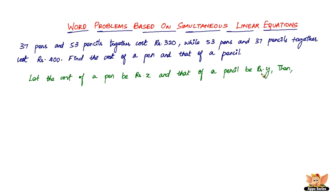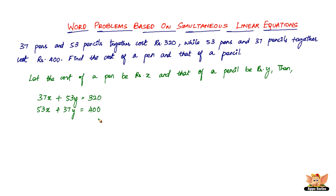Assuming the cost of a pen to be rupees x and that of a pencil to be y, we have: 37 pens multiplied by the cost of one pen, plus 53 pencils multiplied by the cost of one pencil, equals 320 rupees. Similarly, 53 pens multiplied by the cost of each pen, plus 37 pencils multiplied by the cost of each pencil, equals 400 rupees.